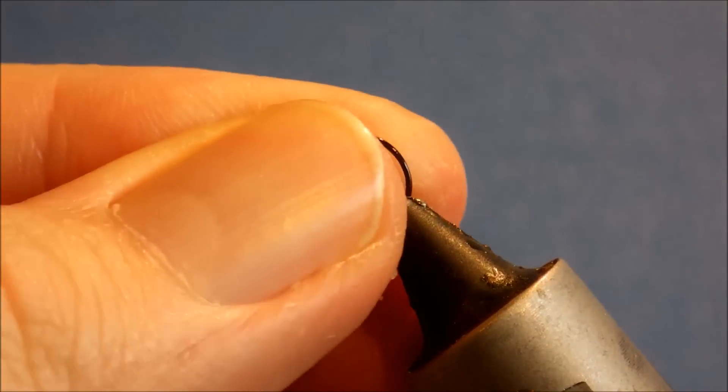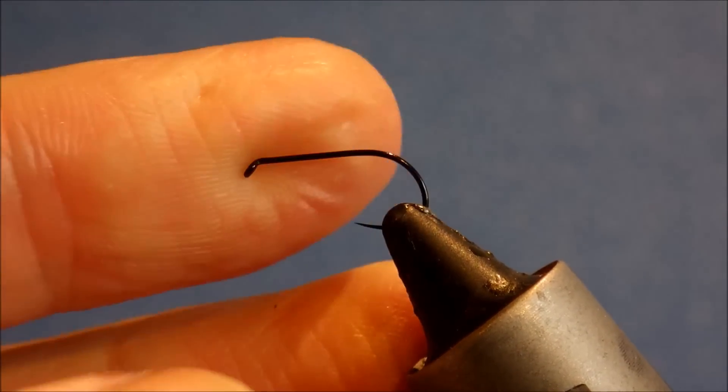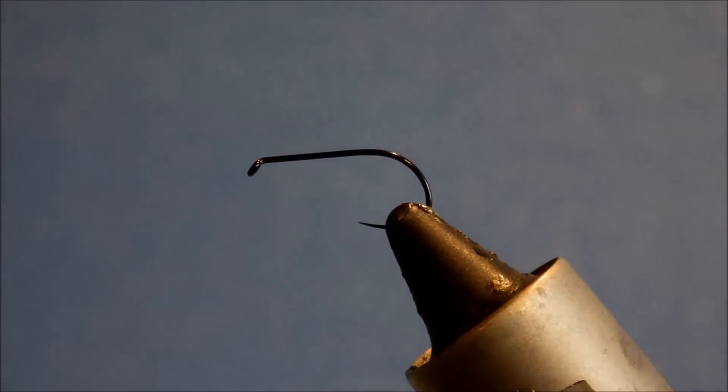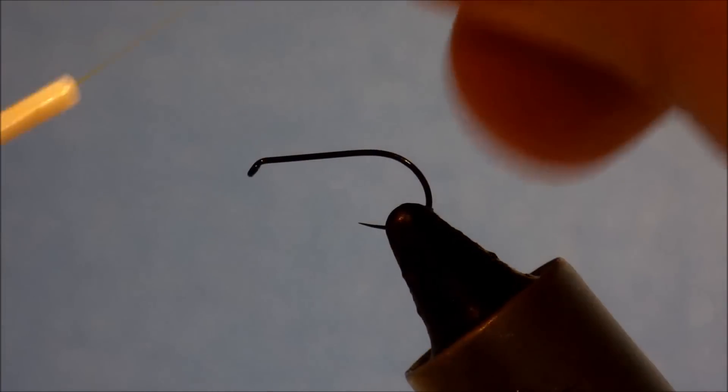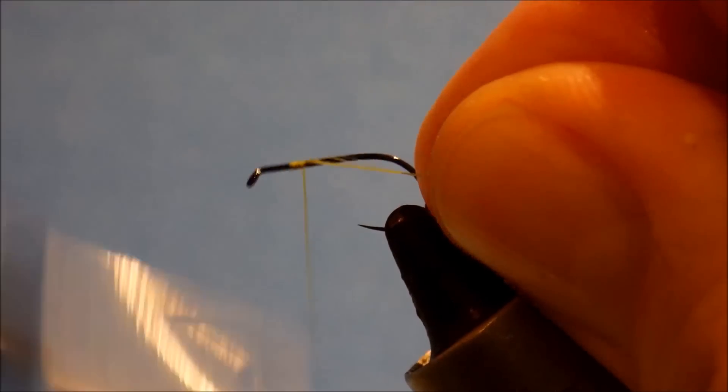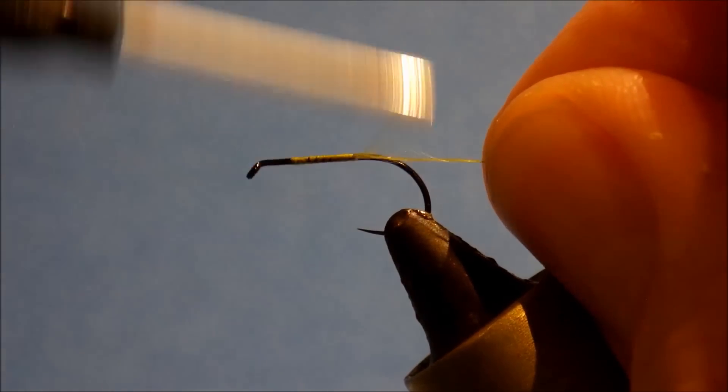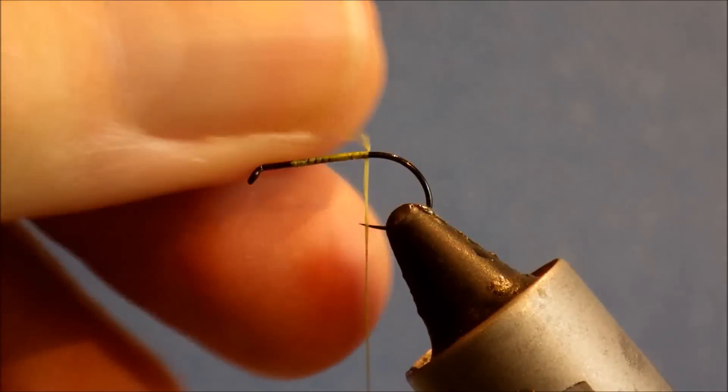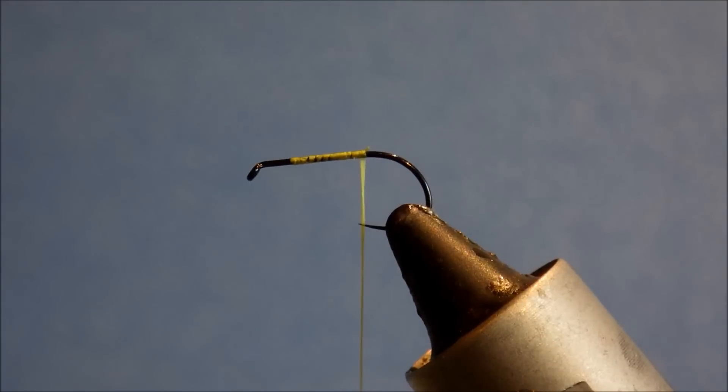I just changed the colour of the body. So I'm tying this on a TMC 103BL, this is a size 15, and I'm going to use some Olive Veevus 10/0 thread. Obviously change the colour to suit the colour of the fly you're tying.